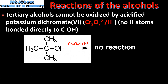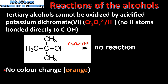Finally, we have tertiary alcohols. Tertiary alcohols cannot be oxidized by acidified potassium dichromate. This is because there are no hydrogen atoms bonded directly to the carbon which is bonded to the OH group. This carbon atom in the middle, which is bonded to the OH group, is bonded to three other carbon atoms — it is not bonded to a hydrogen atom, therefore it cannot be oxidized. In this reaction we have no color change; the solution will remain orange.